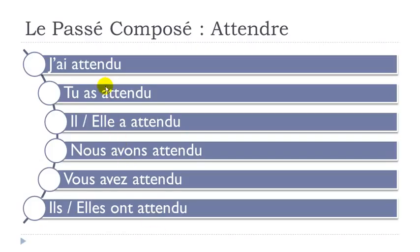So if you remember when I introduced the passé composé form, I told you that most of the verbs are using the avoir verb at the present form and then the participe passé. In that case, attendre becomes attendu at the participe passé, and that's the form you will have to add at the end. And it doesn't change, as you can see. J'ai attendu. Tu as attendu. Il a attendu. Elle a attendu.